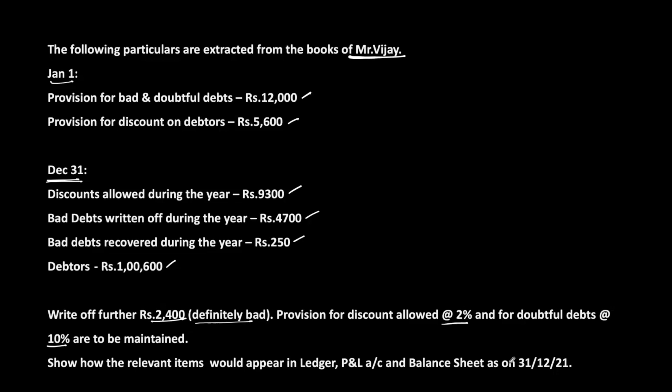The opening provision is 12,000 and bad debts during the year is 4,700. Instead of taking bad debts to P&L, we can simply adjust them against the provision for bad and doubtful debts. Bad debts recovered during the year will be shown on the credit side of P&L. The additional bad debts of 2,400 are also given.